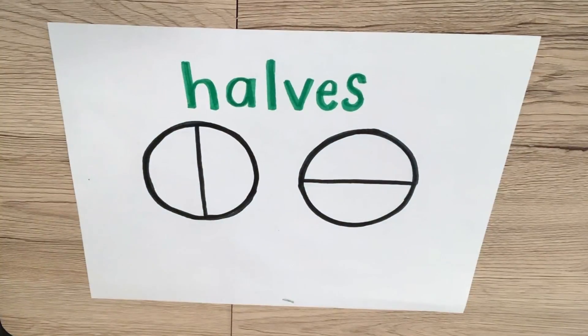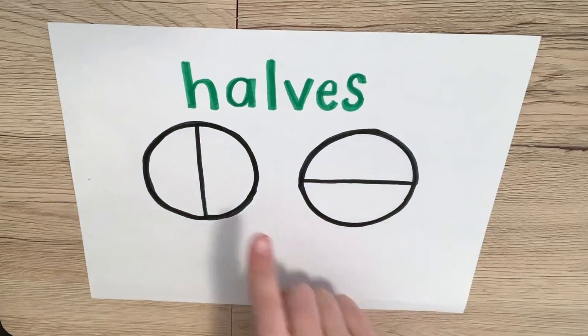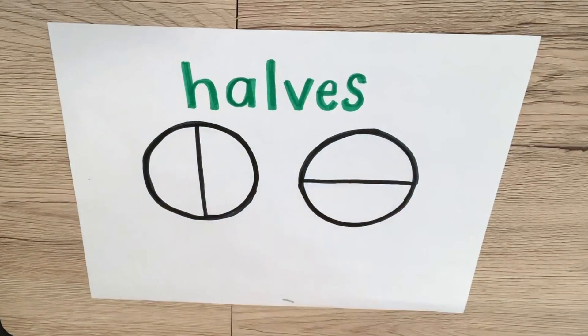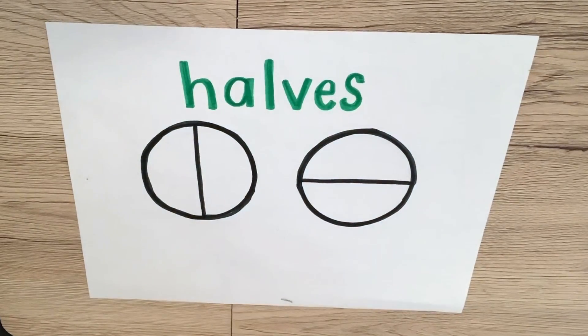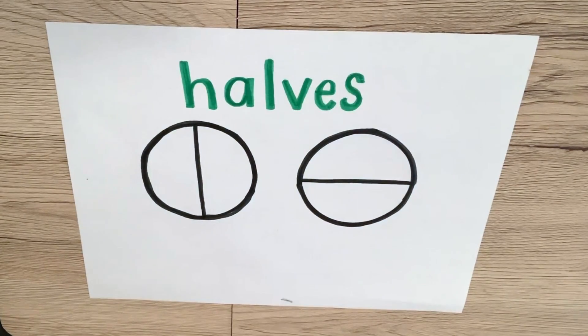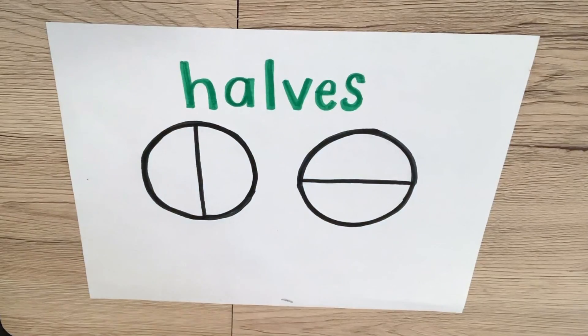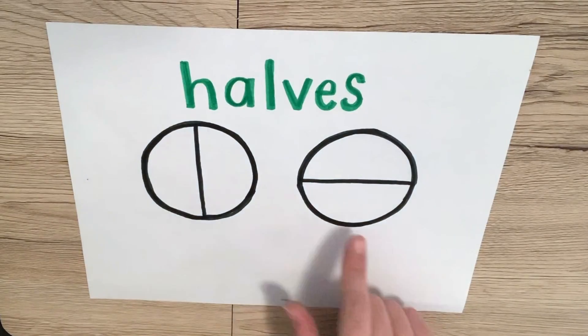Do you mind if I just eat this half of the apple real quick? I'll be right back. So here on my paper I drew two different circles, and I divided or partitioned them into two equal parts. When we take a whole and divide it into two equal parts, we call those halves.